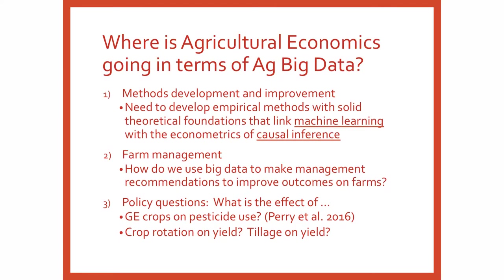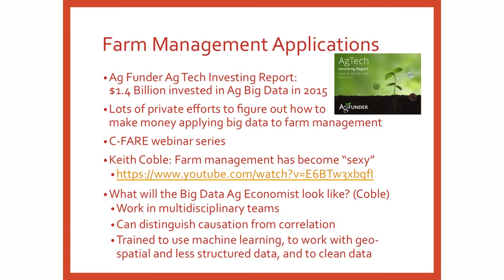Where is agriculture or economics going in terms of big data? I see three things happening. First, methods development and improvement: a lot of work needs to be done developing empirical methods with solid theoretical foundations and linking machine learning with causal inference. Second, farm management: how do we use big data to make management recommendations to improve outcomes on farms? Third, policy questions: the effect of genetically engineered crops on pesticide use — people have been arguing about that, but they may have finally answered it using GFK Kinetic data with thousands of observations. Also rotation effects on yield, or tillage on yield — these can finally be answered broadly using large datasets.